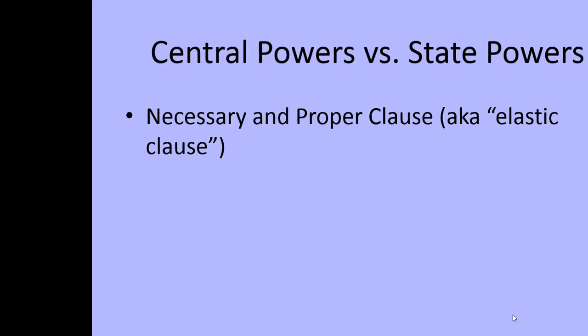The way the Founding Fathers found a balance between wanting to give the central government more power, but not too much, was by first having the separation of powers, dividing our government into three branches: executive, legislative, and judicial, and then also establishing a system of checks and balances so that one branch would not become too powerful.